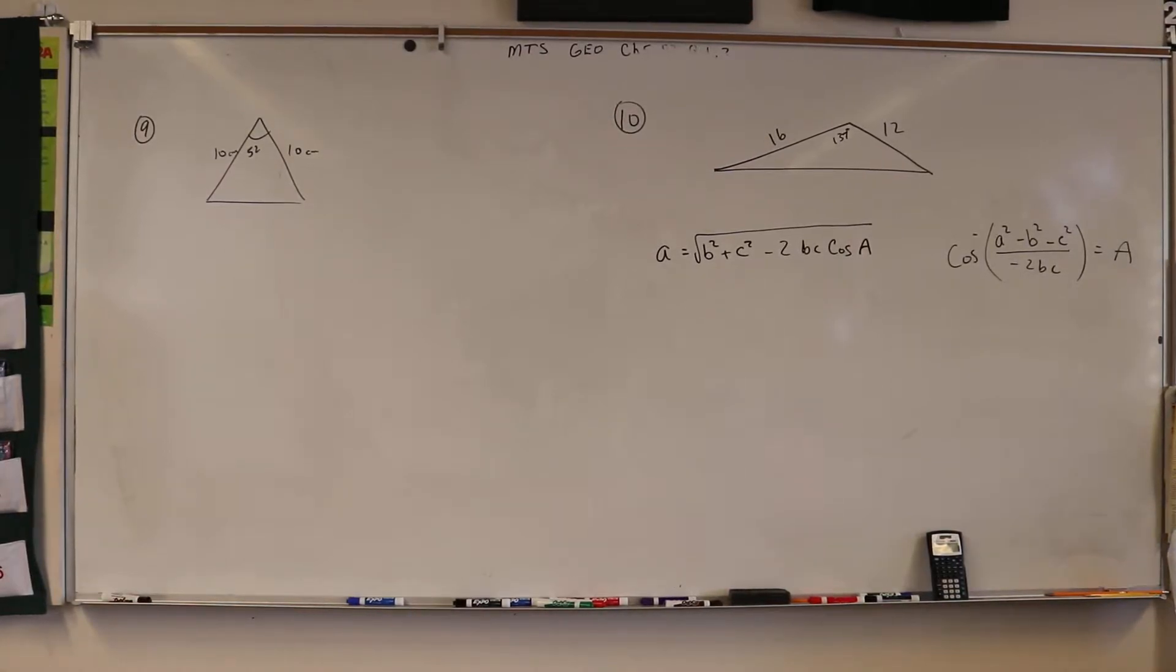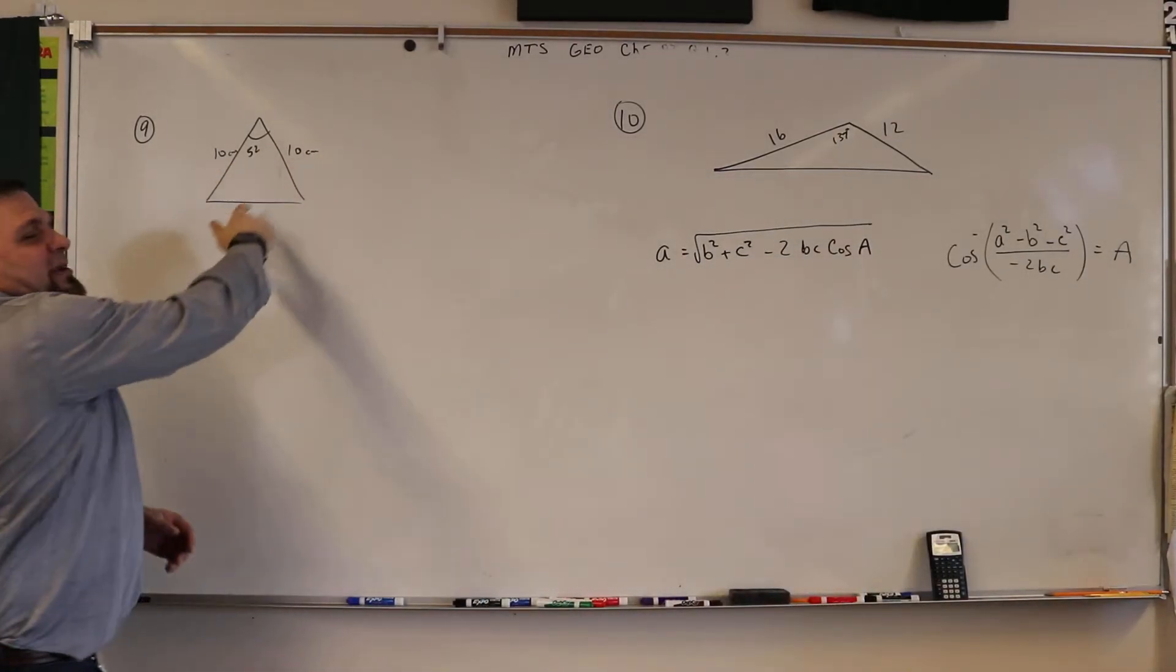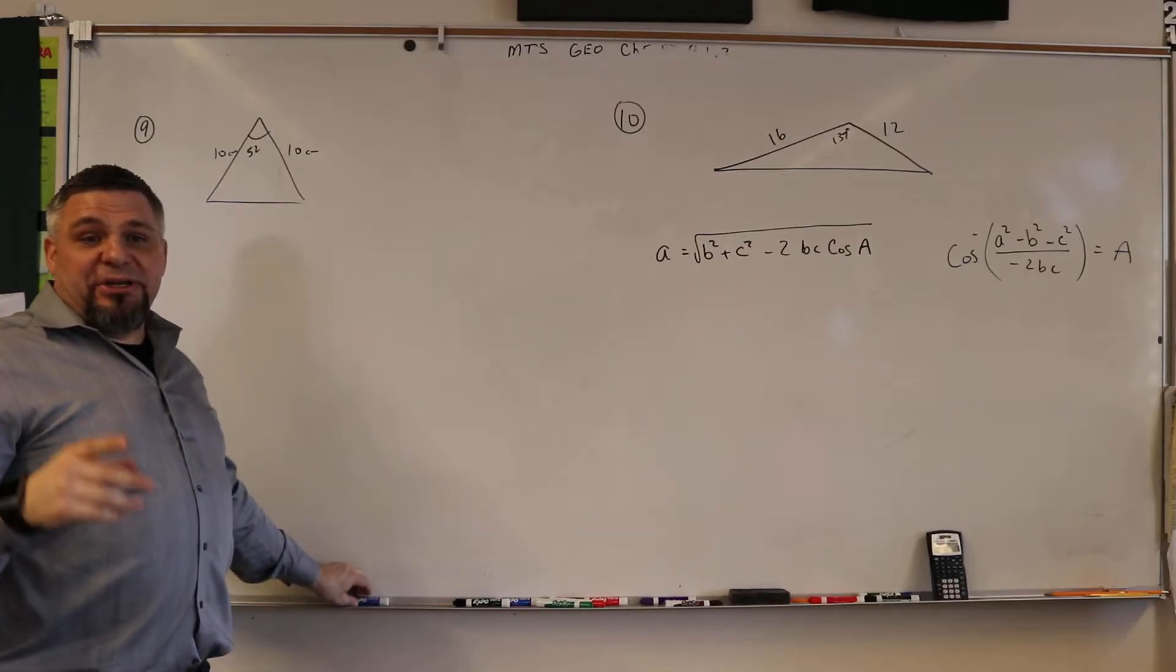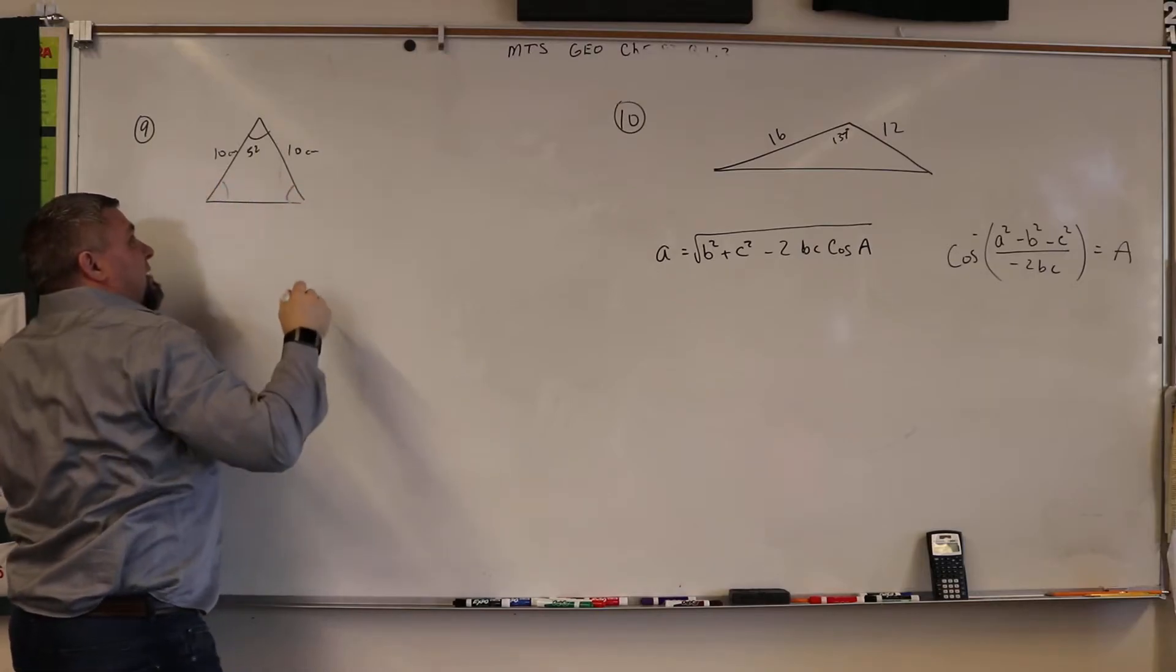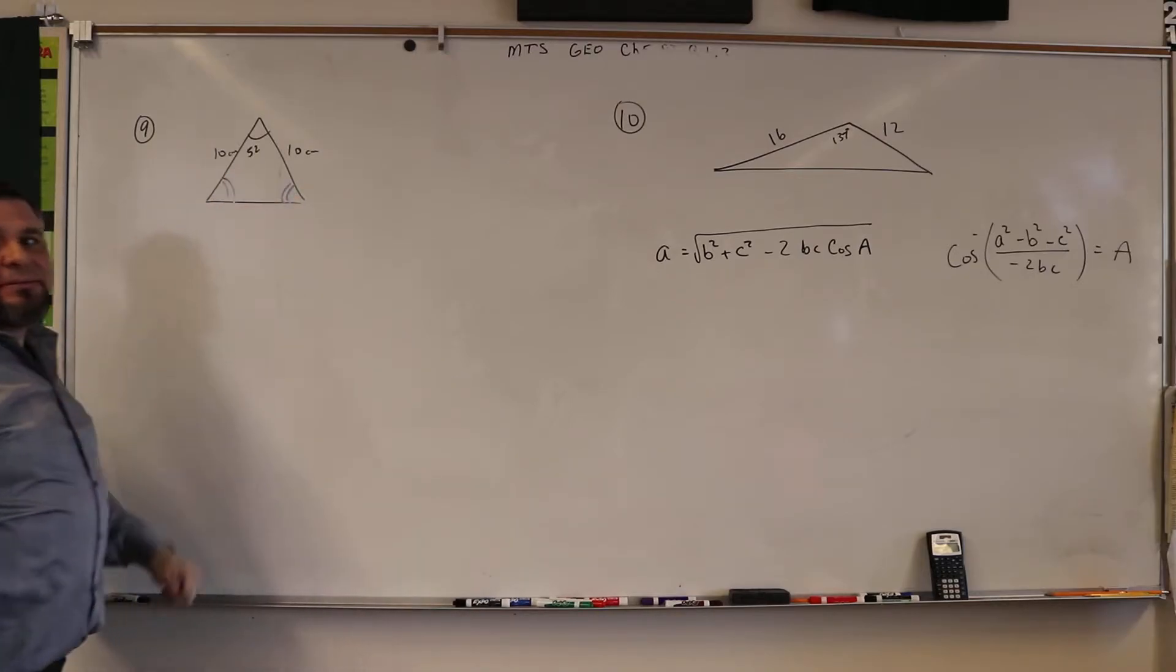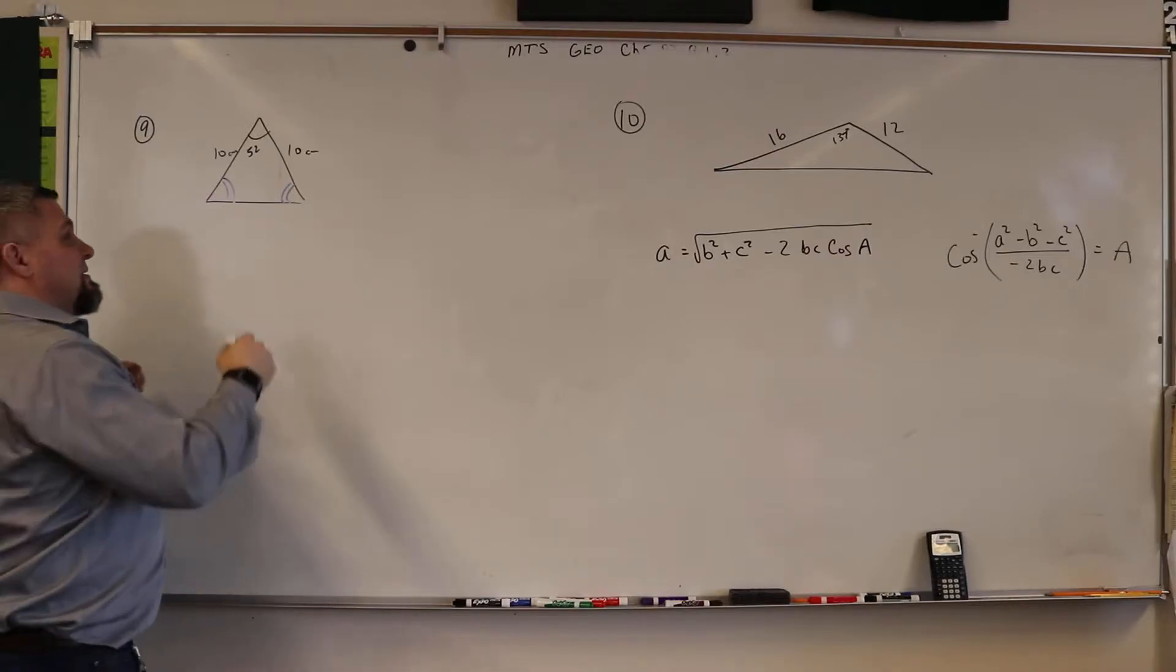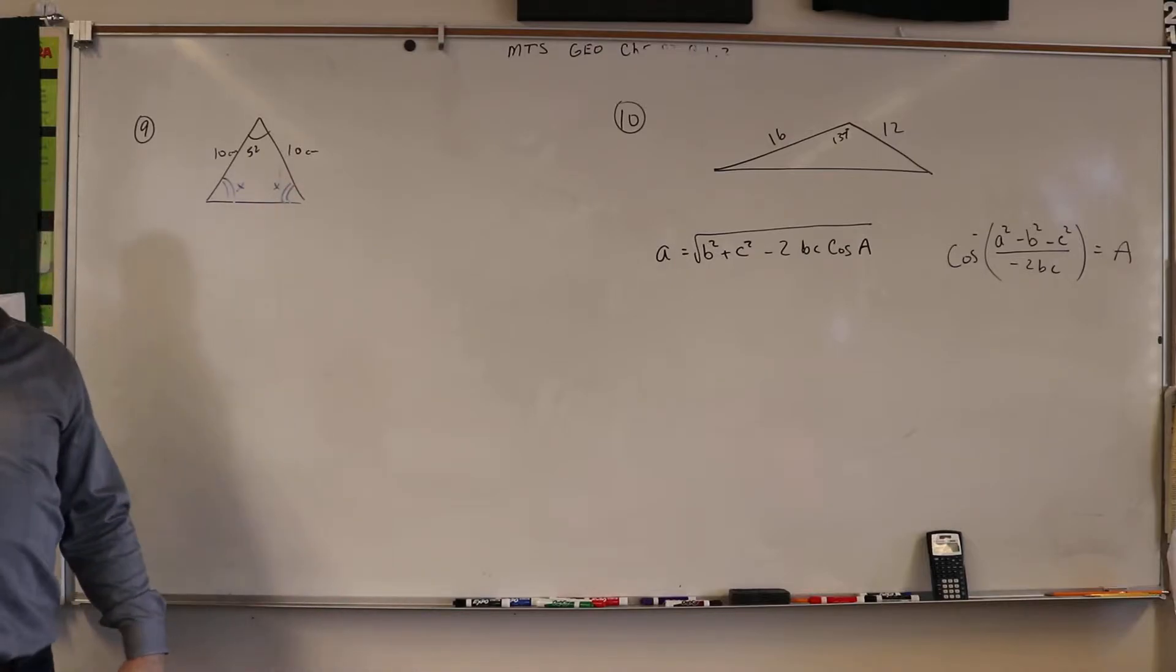Alright, problem number nine on the extensions for pre-calc. The cool part about this is both sides are the same, right? So if both sides are the same, from geometry we should know that these angles are congruent, which means it's an isosceles triangle. That means this angle and this angle are the same, they're both x.